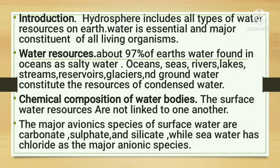About 97% of earth's water is found in the oceans as salty water. Another fraction is present as water vapor and clouds in the atmosphere. Some water is contained in solid state as ice and snow in snowpacks, glaciers, and polar ice caps. Surface water is found in lakes, streams, and reservoirs, while groundwater is located in underground aquifers.